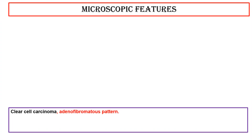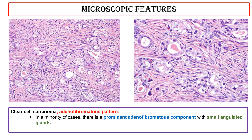Clear cell carcinoma — adenofibromatous pattern: in a minority of cases, there is a prominent adenofibromatous component with small angulated glands. Moderate cytologic atypia is present.